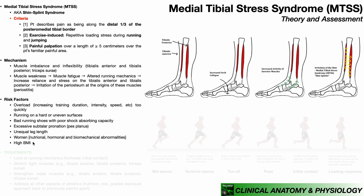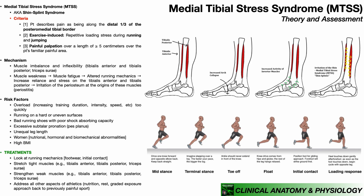Having a high BMI also increases risk, as extra weight makes shin splints more likely. Another risk factor not listed here is running with heel contact. If you look at the walking gait cycle, initial contact is heel contact — that is a normal walking pattern. However, this changes with running.